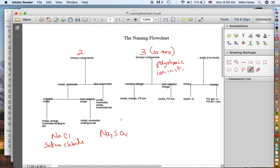Now if it's ternary, that means it's going to have a polyatomic ion in it. So you have to decide is sodium variable or non-variable. And sodium is non-variable. So since it's non-variable, you just say the name of the metal. The name of the metal is sodium.